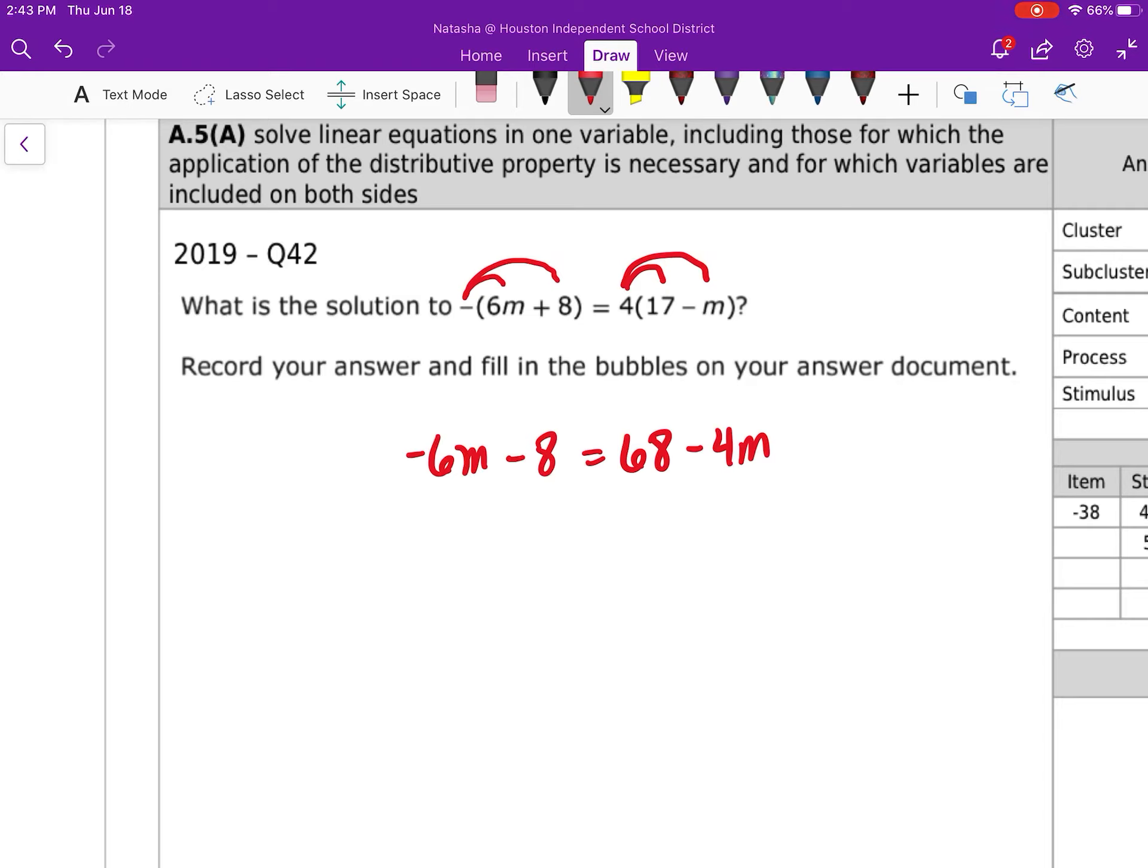We're now going to balance our equation, and we're going to move like terms to each side. So I'm going to add 6M. You could have added 4M instead. That would have been completely valid as well. Negative 8 is equal to 68. Negative 4 plus 6 will give me positive 2M. I'm going to minus 68. That's going to become negative 76. And that's going to be equal to 2M divided by 2. That gives me M is equal to negative 38.